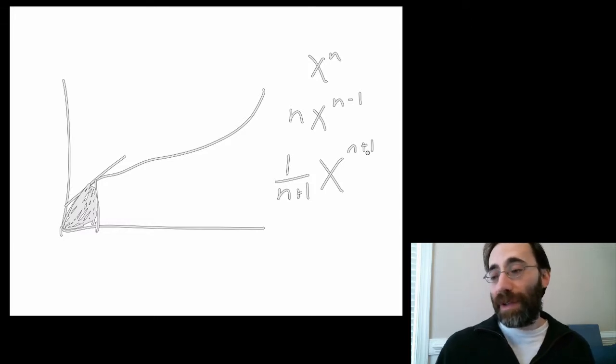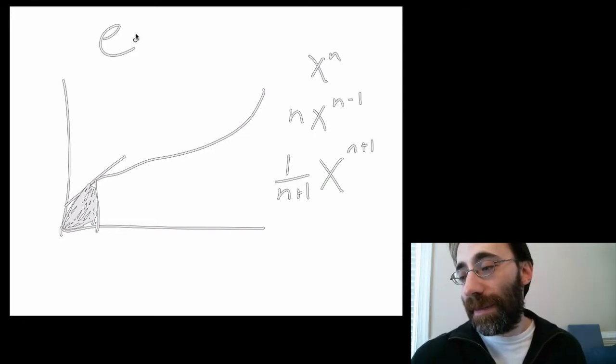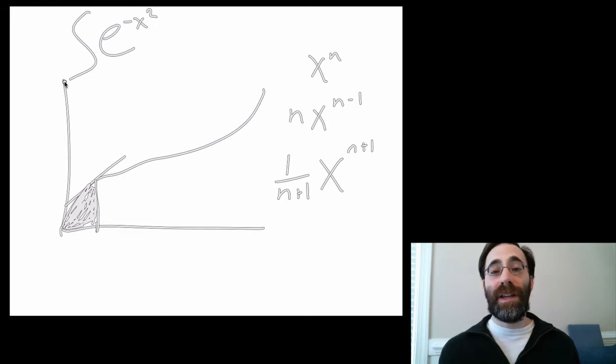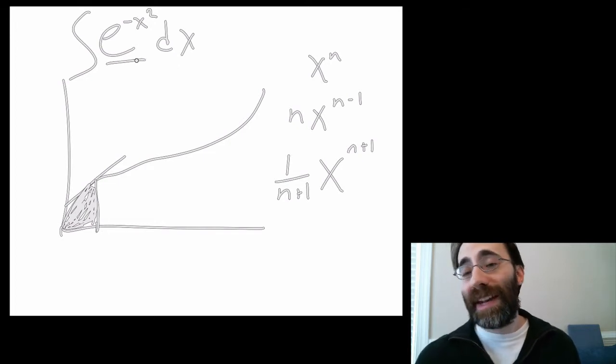For instance, a common integral you will see in political science for inference is the integral of this thing here. This notation will become clear to you in the next few modules. But this is the integral of e to the negative x squared.